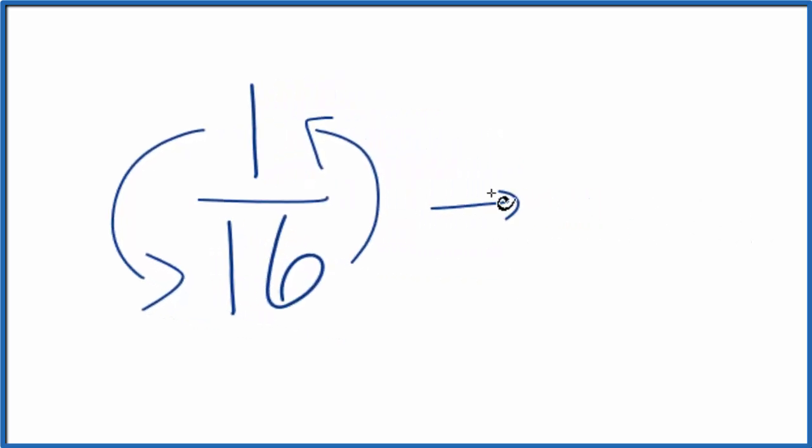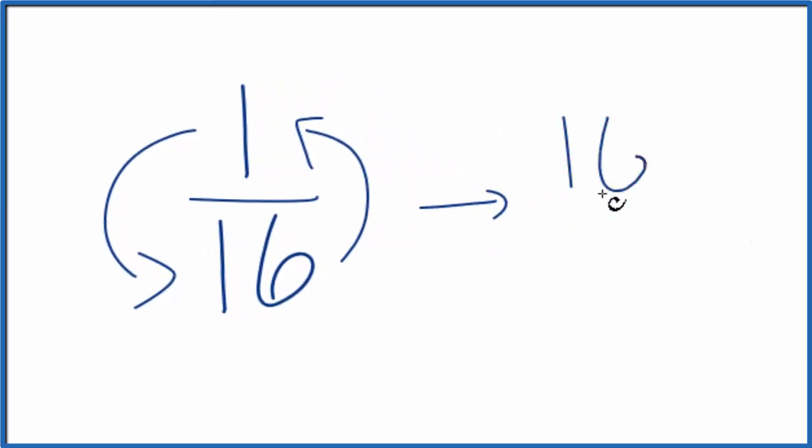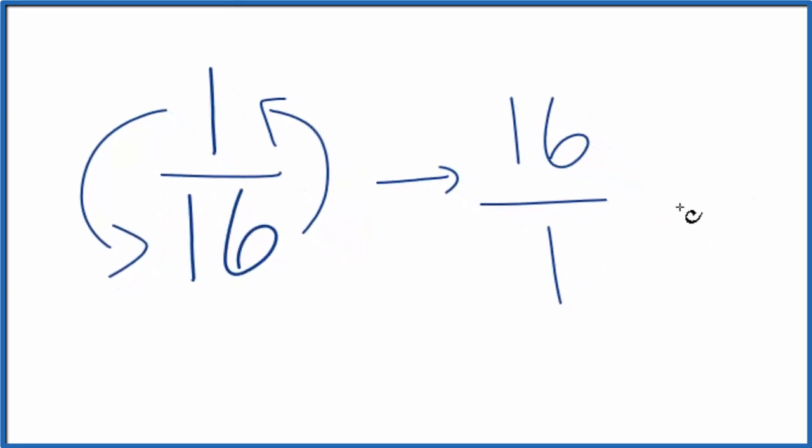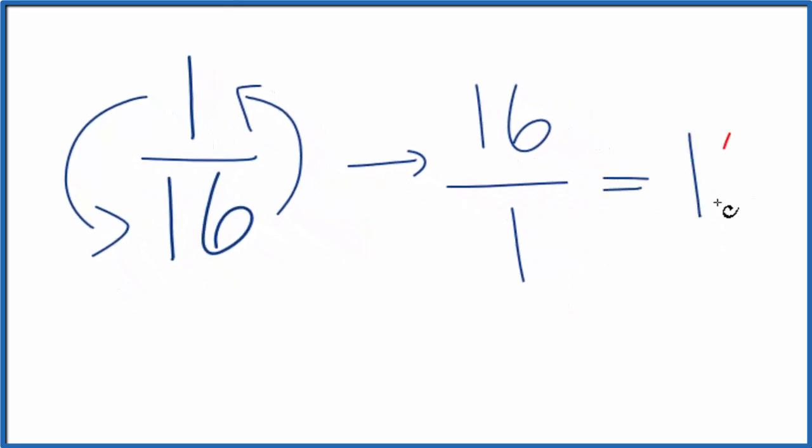We end up with 16 on the top, and then 1 on the bottom. 16 over 1, that's our reciprocal for 1/16. 16 over 1, we could write that as just 16, because 16 divided by 1 is 16.